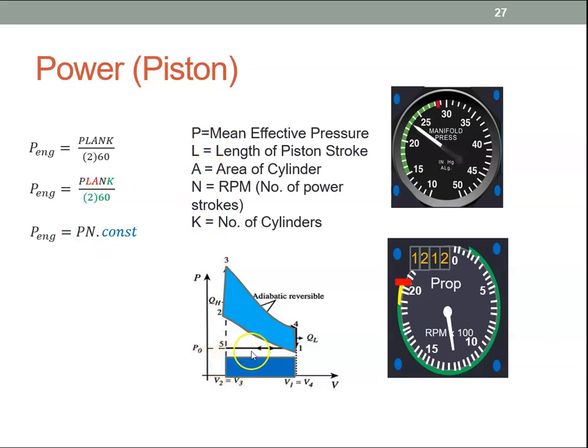And it relates to the manifold air pressure. So what we get indicated in the cockpit is only an indication of the actual power produced. So we have the RPM. That's no problem. Pressure is the manifold pressure. It's not the mean effective pressure, but it's related to it. So as we increase power, this manifold pressure will increase, which means the mean effective pressure is increasing as well. But you can't calculate exactly what the power produced from the engine is just by these two indicators. So it's only an indication of the power produced by the engine.